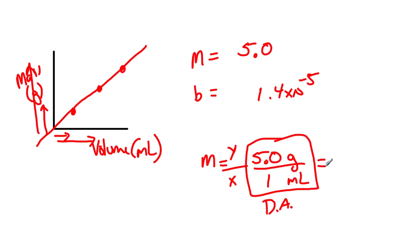This grams per milliliter is also known as density. So your slope in this case when you plot mass over volume is also your density.